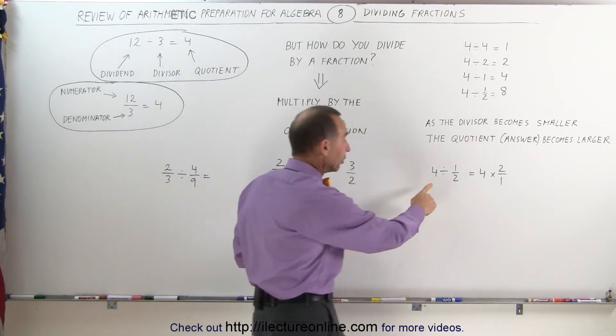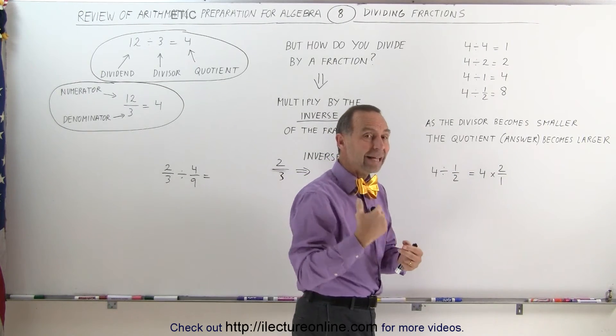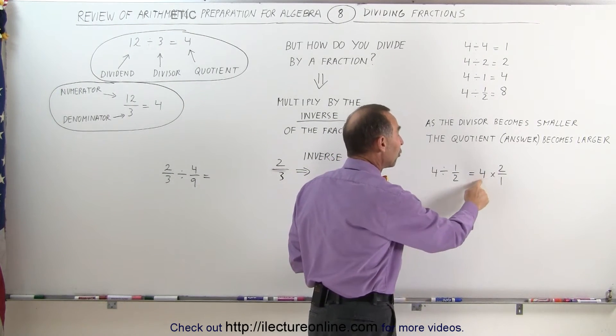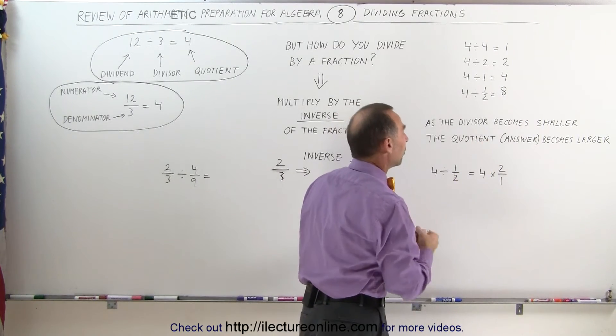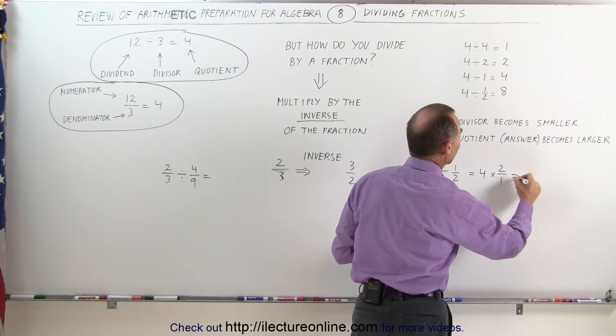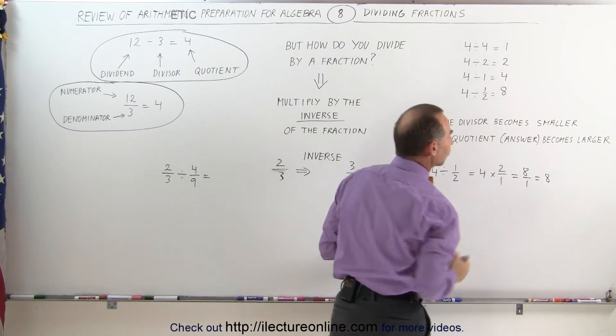Which means if I now divide the number 4 by 1 half, that's the same as multiplying by the inverse. I'm going to take 4 and multiply times the inverse of the fraction, which is now 2 divided by 1. Well, 4 times 2 gives me 8, divided by 1, which is simply 8, and that's where the answer came from.